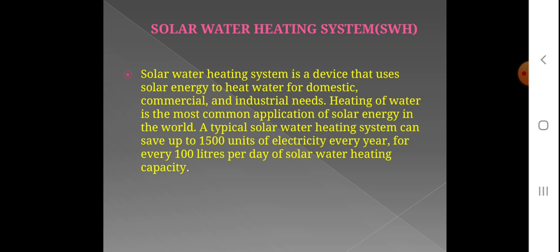Heating of water is the most common application of solar energy in the world. A typical solar water heating system can save up to 1500 units of electricity every year, for every 100 liters per day of solar heating capacity. If you have a solar water heating system, you can heat up the water.